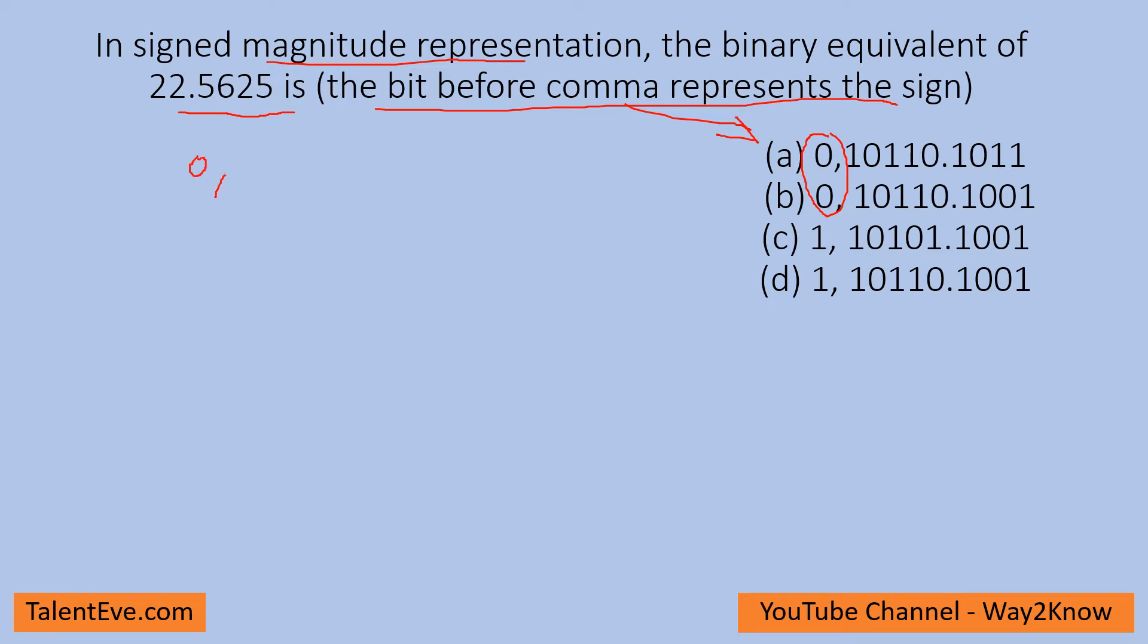Now how we would convert 22.5625 into binary equivalent is that first we will take 22. To convert into binary: 2 into 11 is 22 with remainder of 0, 2 into 5 is 10 with remainder of 1, 2 into 2 is 4 with remainder of 1, and then 2 into 1 is 2 with remainder of 0.